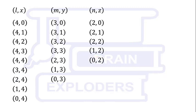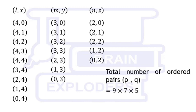Selection of exactly one pair from each list is necessary and completely independent of another lists. Therefore, total number of ordered pairs (p,q) are 9 × 7 × 5, that is 315, and this was our solution.